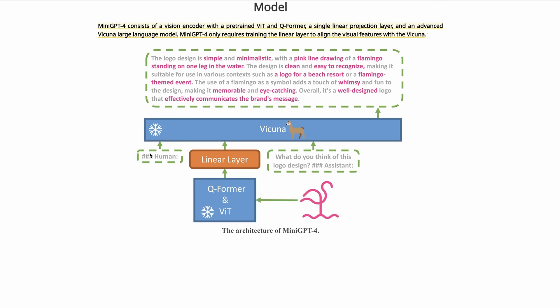They've set up some token structure for how they do this — the human puts something in, then you've got an assistant responding. You're basically taking your image, converting it into vectors that eventually get fed into the large language model, and then using that to generate some kind of answer. It's really important to understand that the main model and the Vision Transformer are pretty large, yet these are frozen, so there's no training effort on them — just training that single layer in between.